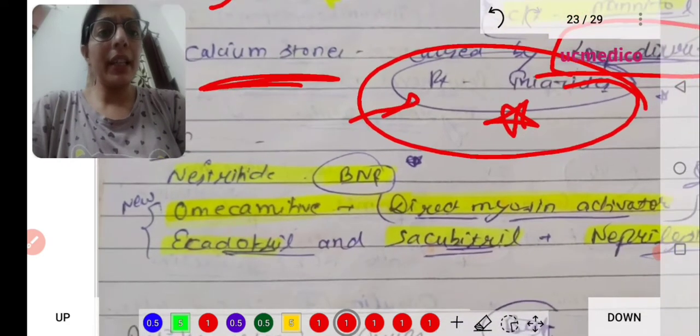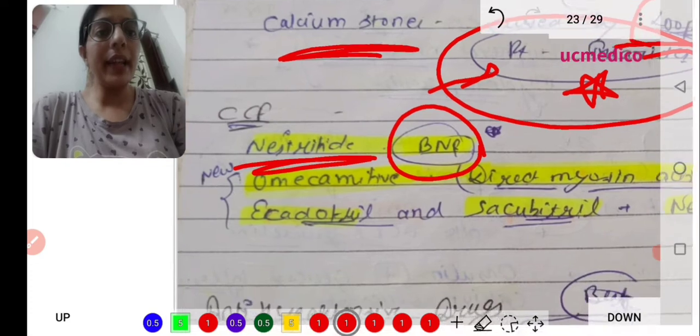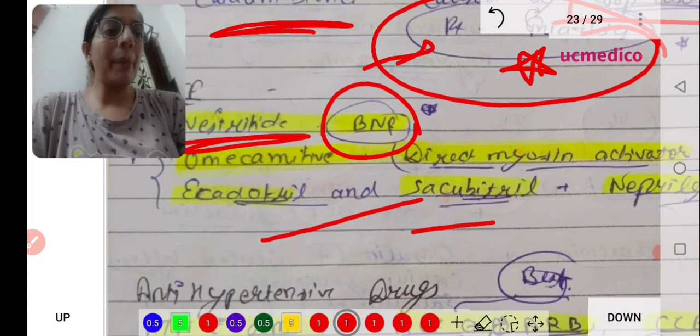For congestive cardiac failure, brain natriuretic peptide, that is nesiritide, omecamtiv, and sacubitril. Sacubitril is a neprilysin inhibitor.